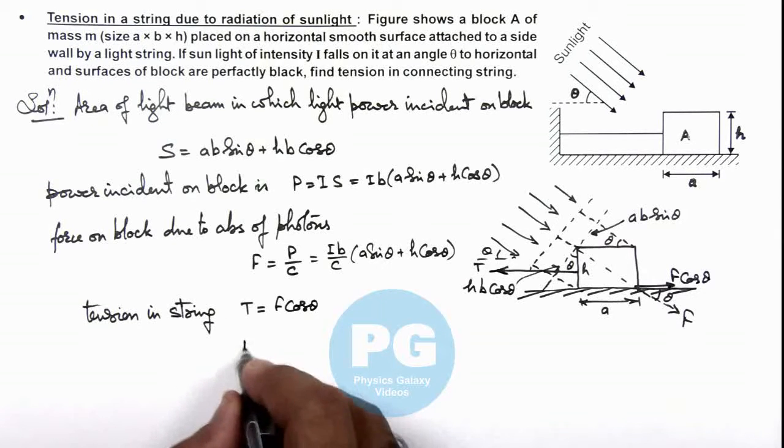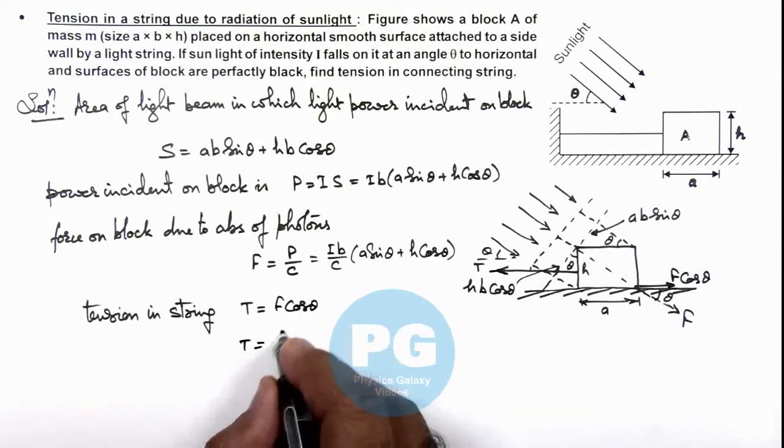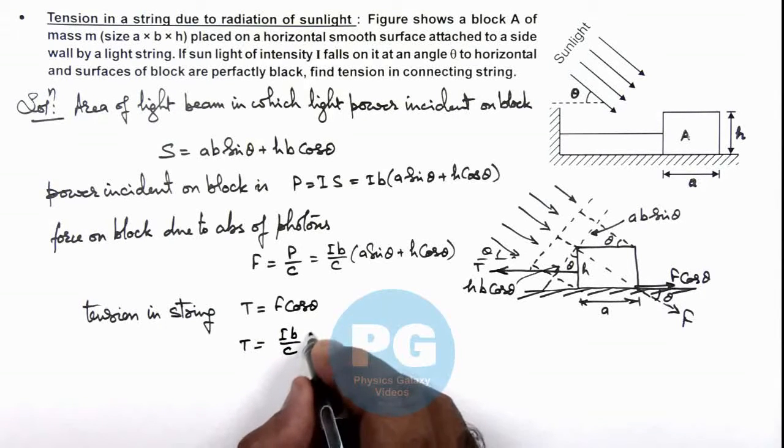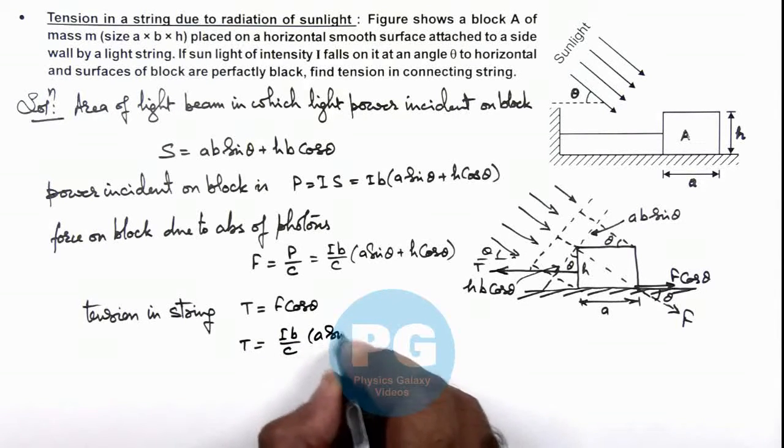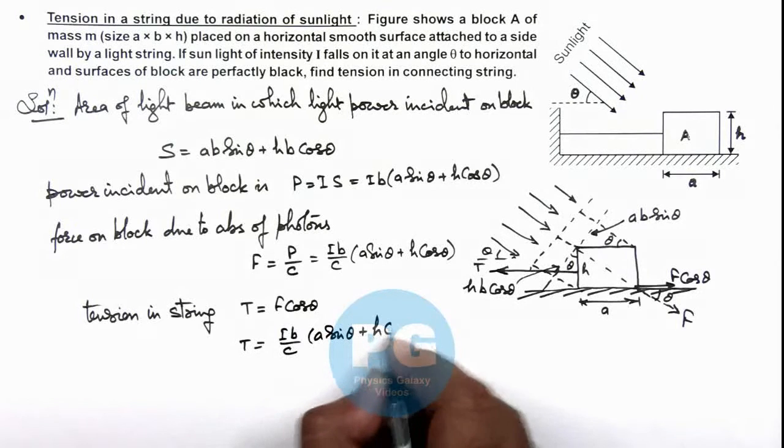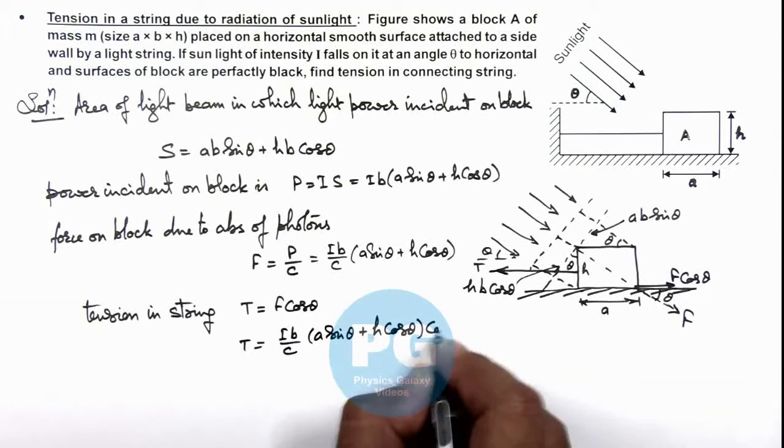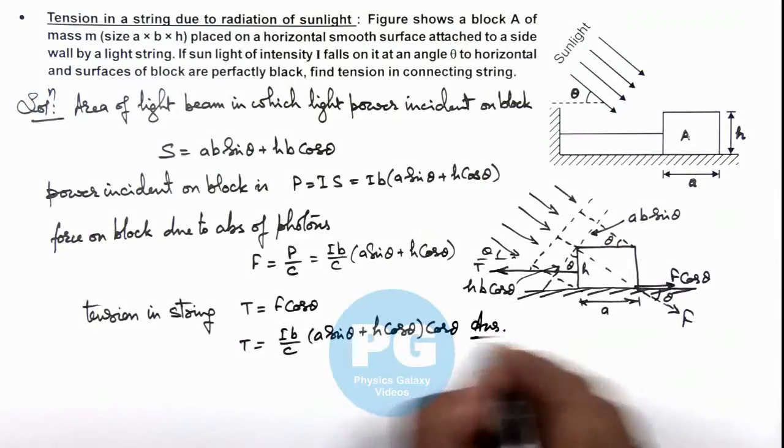So T can be written as F cosθ, which will be written as Ib/c multiplied by a sinθ plus h cosθ, whole multiplied by cosθ. That is the result of this problem.